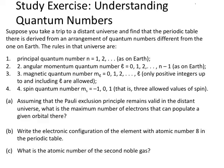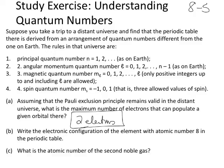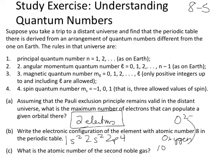Problem 8-5: the Pauli exclusion principle means the maximum number of electrons in any given orbital is two. Write the electronic configuration of the element with atomic number 8 — that's oxygen: 1s2 2s2 2p4. The atomic number of the second noble gas is 10 (neon). So oxygen likes to take a 2- charge to reach the noble gas configuration of neon.